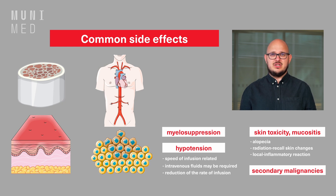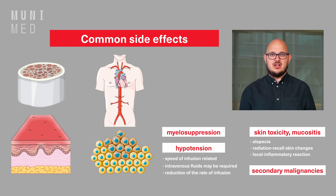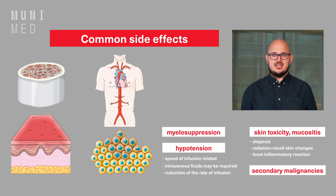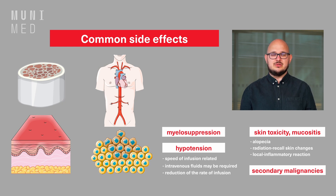After stabilization of the patient, the rate of infusion should be reduced. Some patients may experience skin toxicity manifesting as alopecia, radiation recall skin changes, or a local inflammatory reaction at the injection site. Mucositis and diarrhea can also be seen in patients on etoposide therapy. Interestingly, etoposide increases the risk of secondary malignancies, especially acute leukemias.